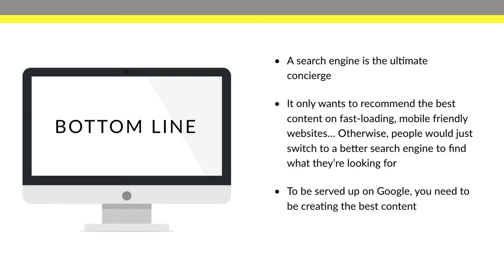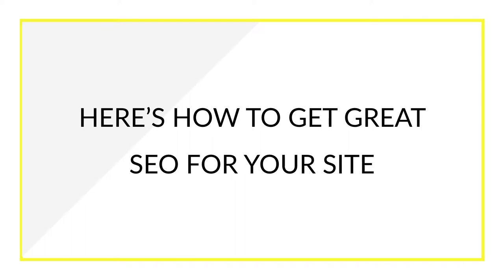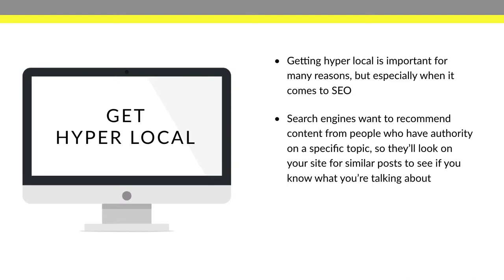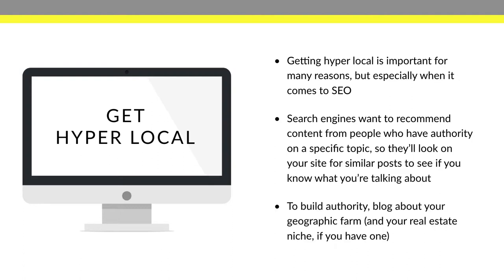If you want to be served up on Google, you have to be creating the best content possible. Here's how to get great SEO for your site. First and foremost, you want to get hyper local — it's super important, especially when it comes to SEO. Search engines want to recommend content from people who have authority on a specific topic. They're going to look through all of your posts to see if you know what you're talking about. Blog about your geographic farm and also about your niche.